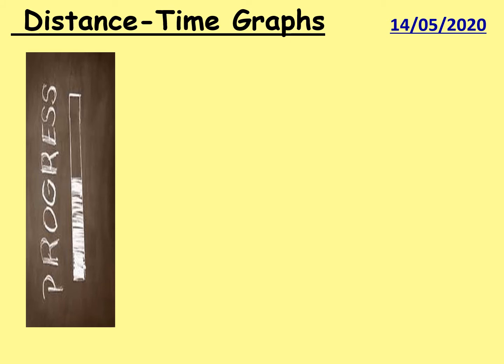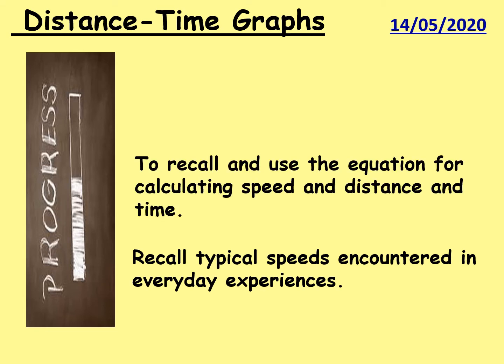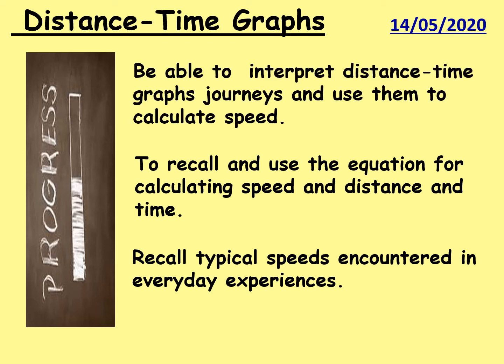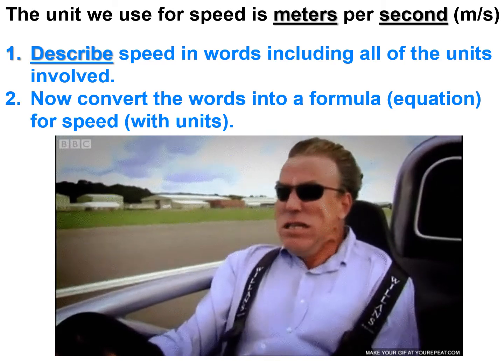The objectives of today's lesson: first, we've had a good think about recalling typical speeds — it's very useful when answering questions to have a feel for whether your answer is appropriate for the object. Second, the equation: speed equals distance divided by time — you did that in year seven. And third, distance-time graphs, which we've done earlier in year nine, using them to calculate the speed of an object.